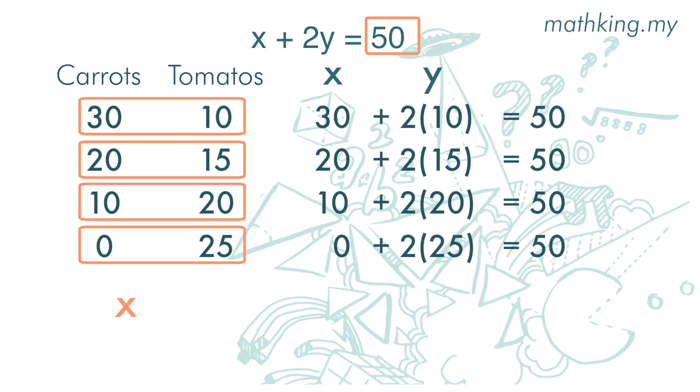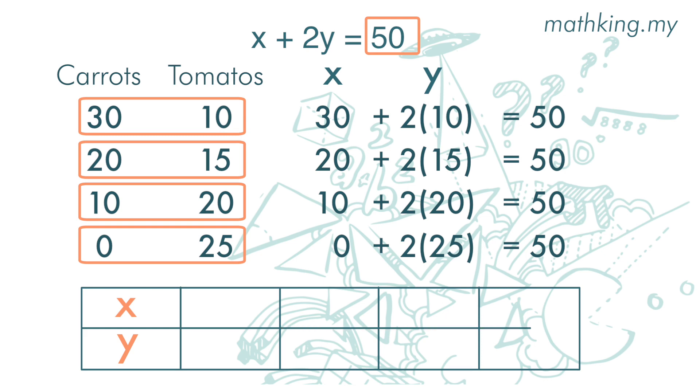Now, if we use x to represent carrots and y to represent tomatoes, then when x is 30, y is 10. When x is 20, y is 15. When x is 10, y is 20. When x is 0, y is 25. So here we have a table to represent the different pairs or sets of answers for this linear equation in two variables.